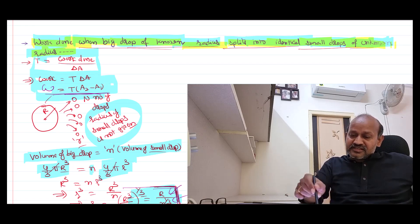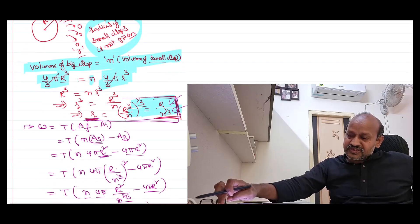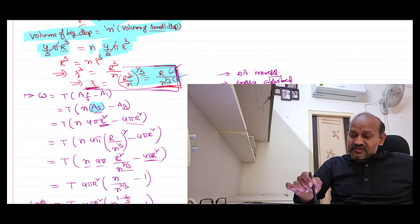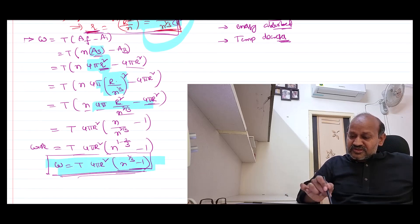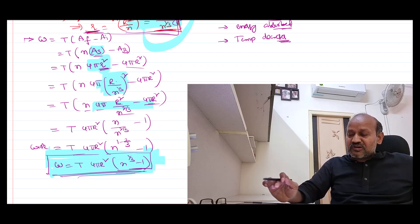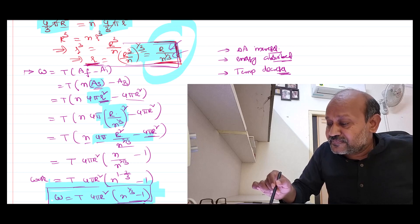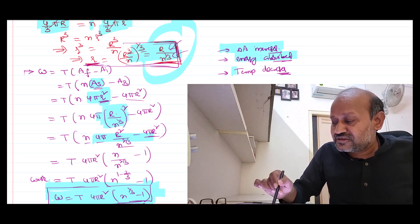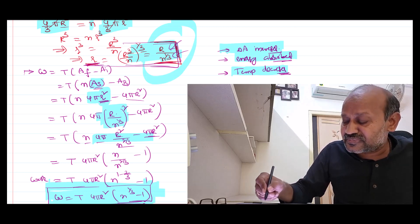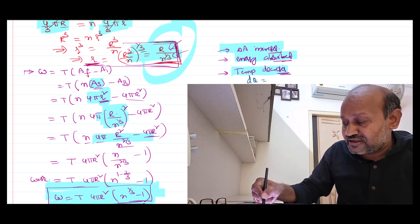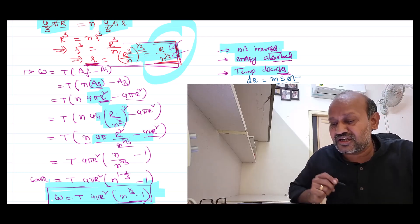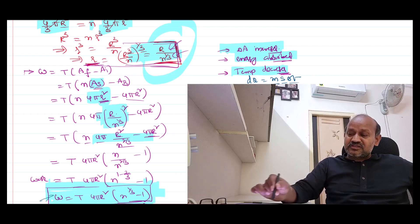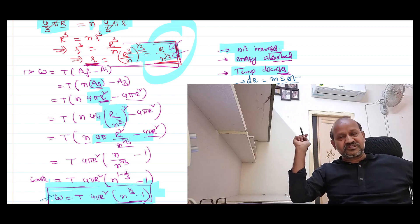Using volume of big drop = n × volume of small drop, with the formula 4/3 π r³, we derived small r = R / n^(1/3). Substituting into the work formula, we get the final answer. One important extension: if you want to find by how much temperature decreases, you need the specific heat and can use dQ = ms ΔT. By equating this work done to ms ΔT and knowing volume and density to find mass, you can calculate the change in temperature.